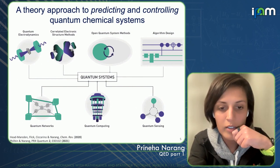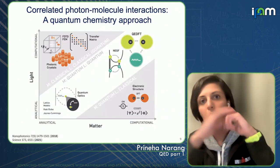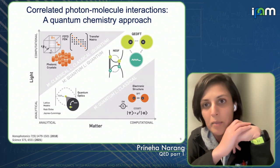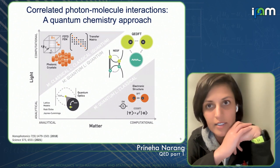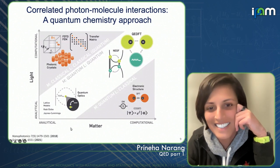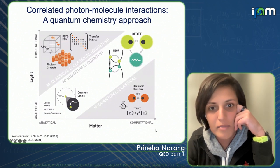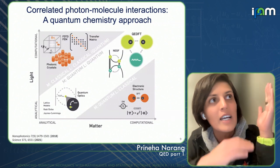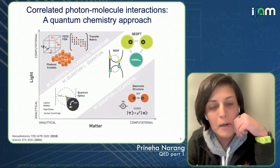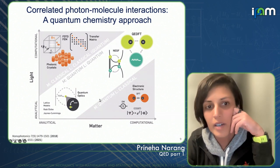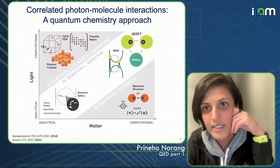I'll start by telling you about the reason why we've needed to develop new methods in this field of light-matter interaction. This is a theorist's view of the world — light on one axis, matter on another — going from highly analytical to computationally fairly expensive methods. When you start to talk about light-matter interactions, one natural approach is to take techniques from quantum optics, very well-developed Jaynes-Cummings or lattice models able to describe such interactions.